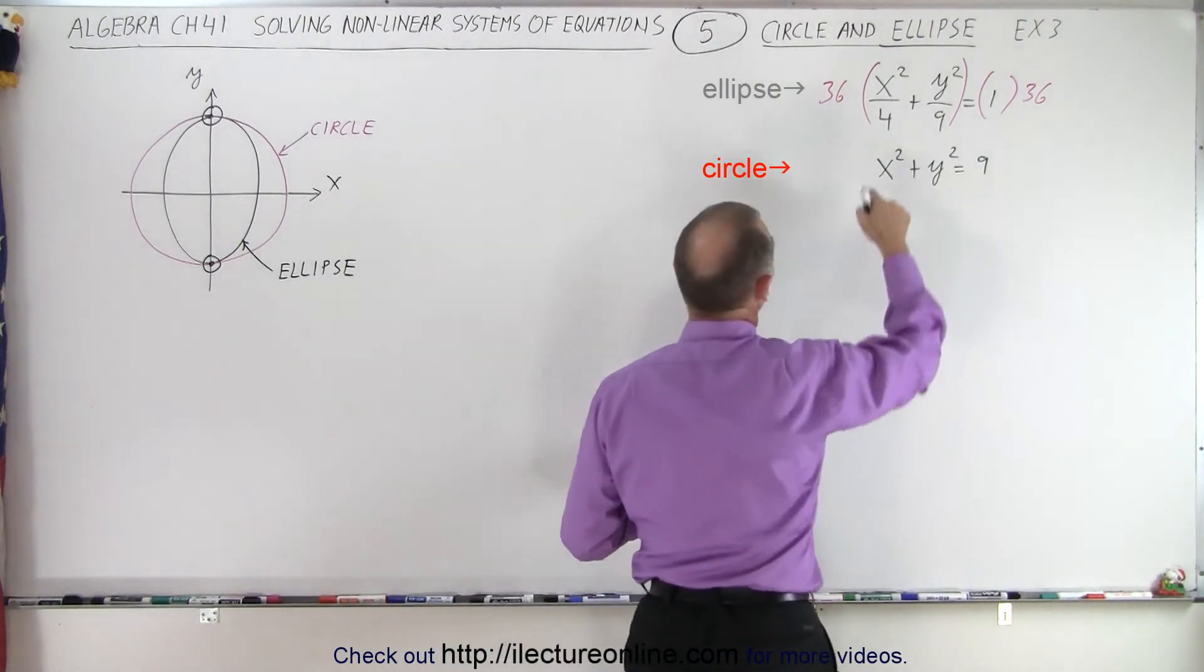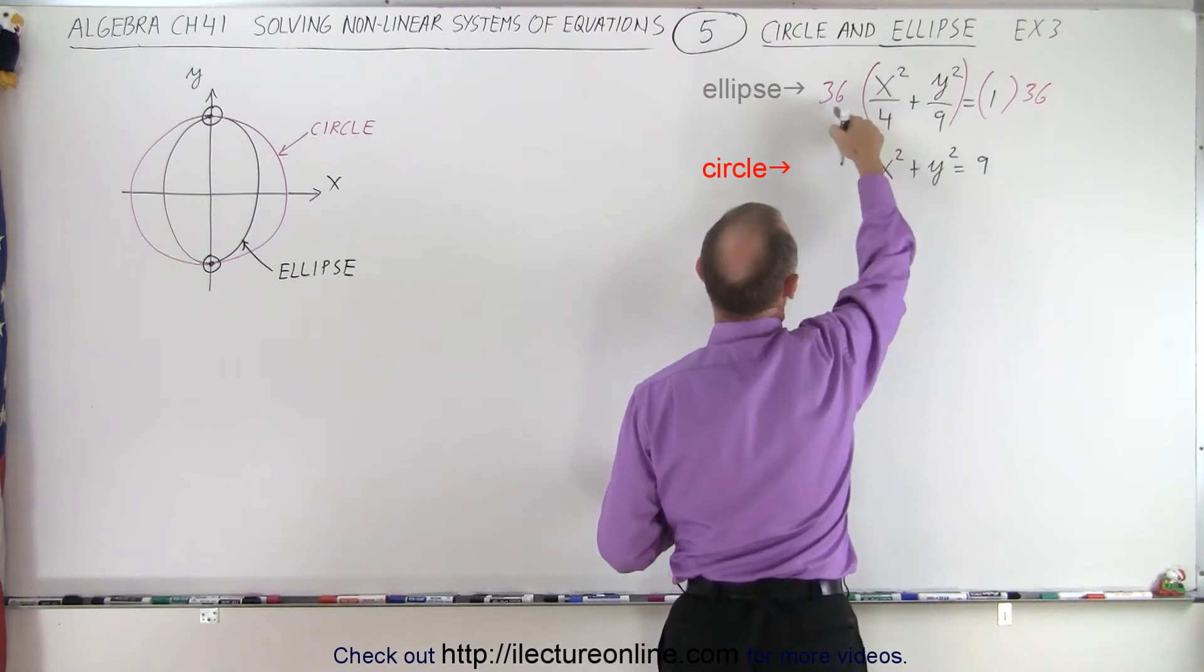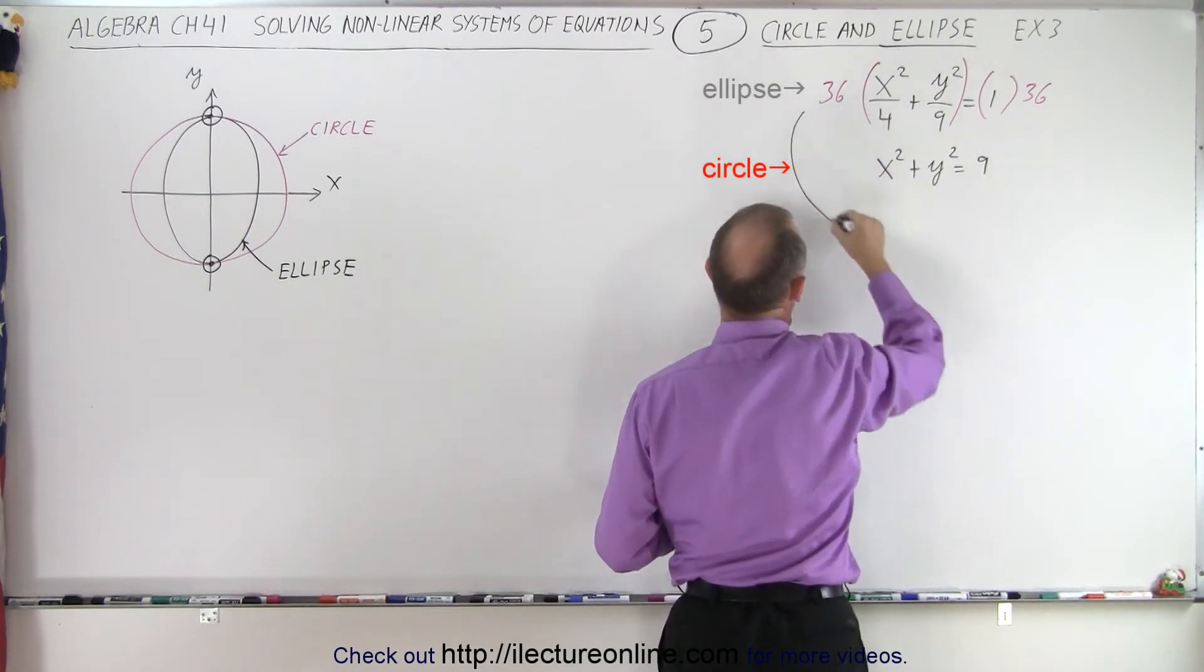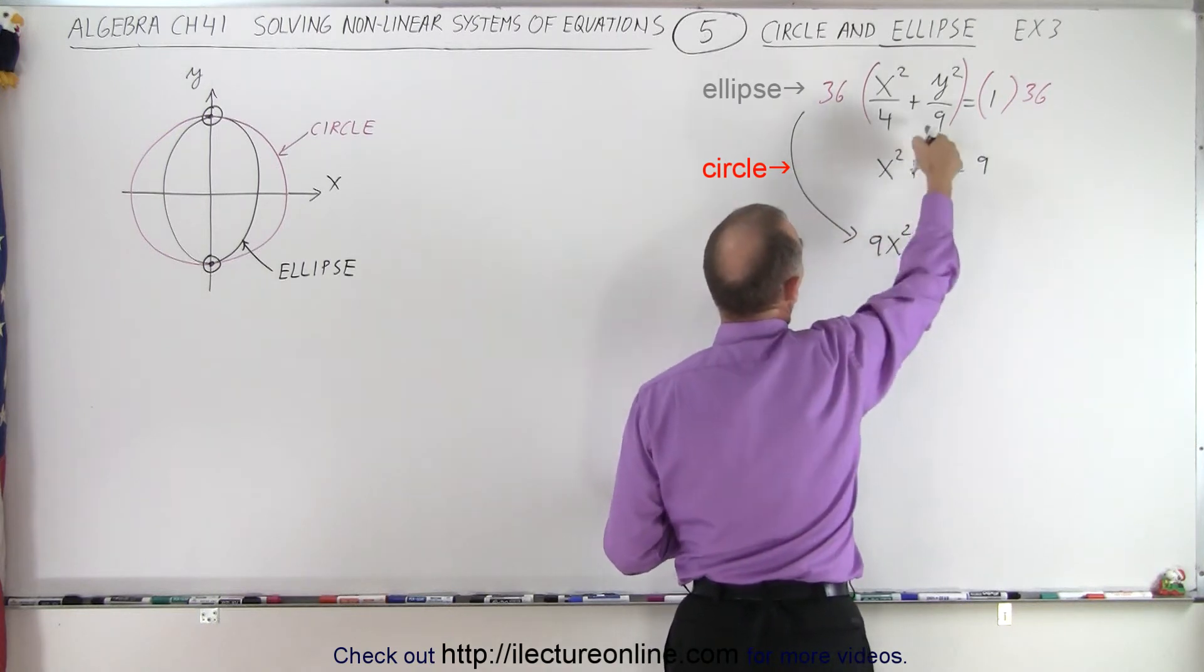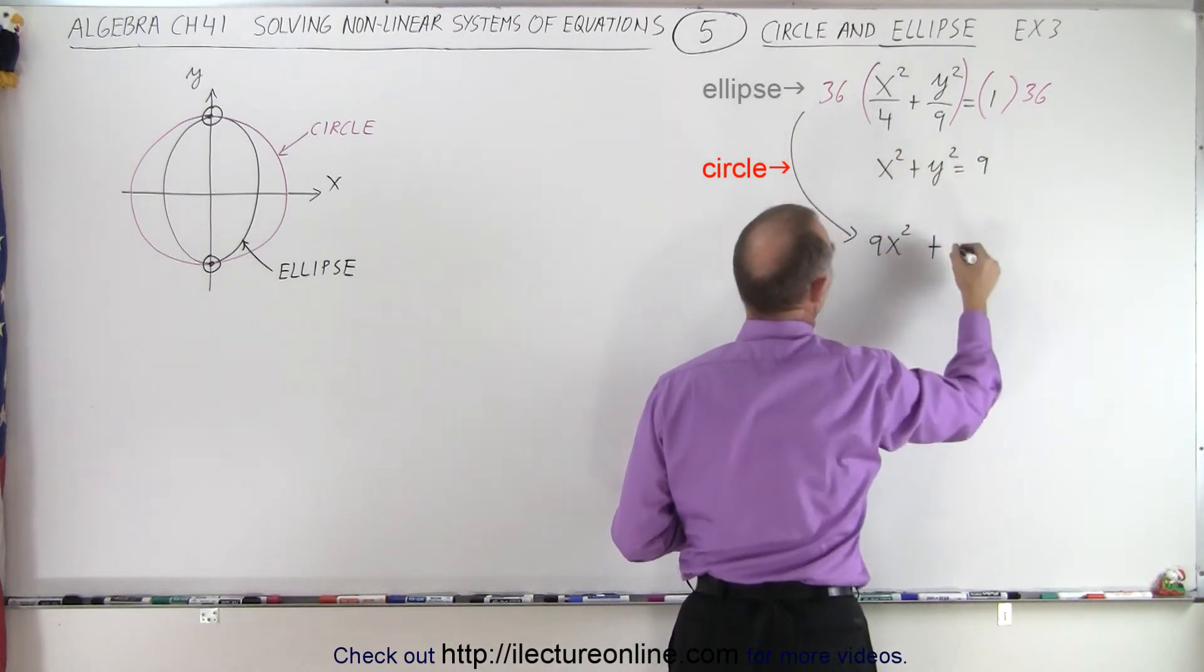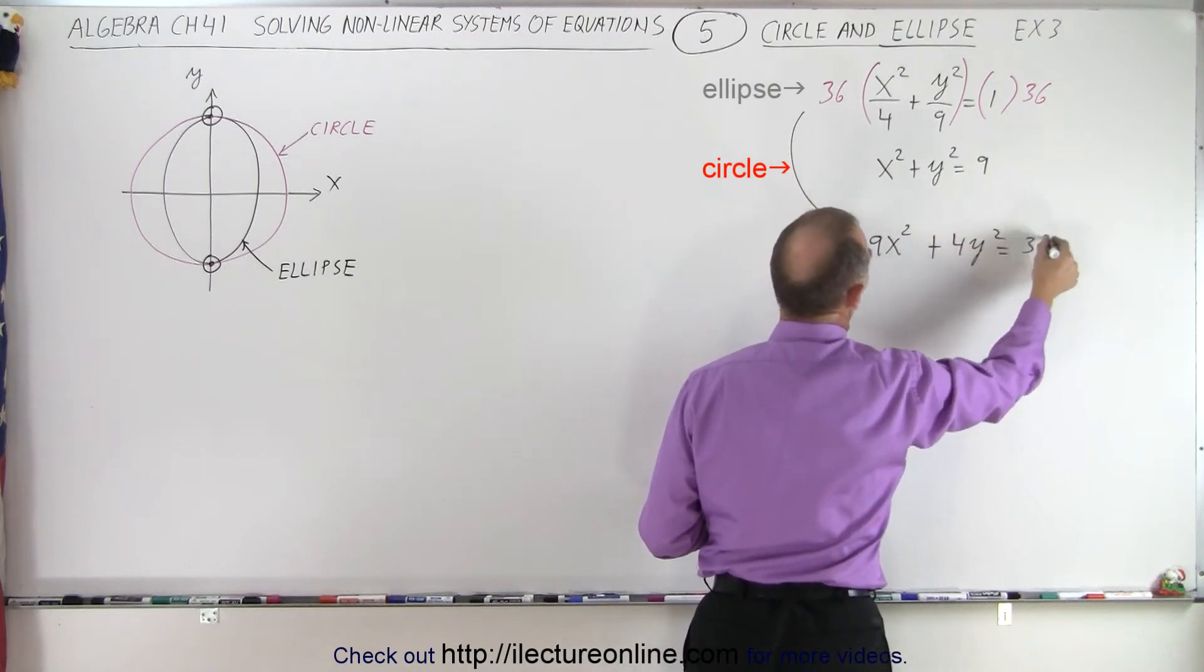We'll worry about the second equation later. Let's do this one first. So when we do this, 4 goes into 36 nine times, so we end up with 9x squared. Plus 9 goes into 36 four times, so we end up with plus 4y squared is equal to 36.